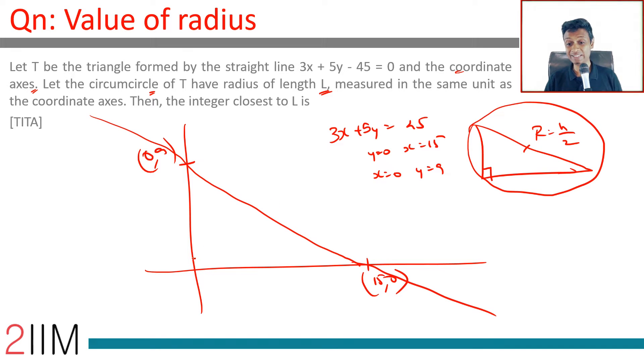The right angle triangle has sides 15 and 9. So the hypotenuse we can find out: just square root of 9 squared plus 15 squared. The circumradius, which is effectively L in our case, is half of the hypotenuse, which is half of square root of 9 squared plus 15 squared.